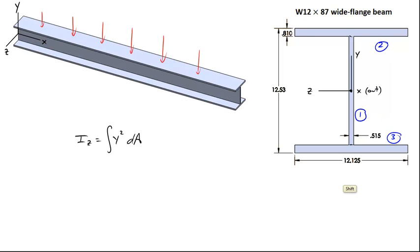There's a few other dimensions that we need to make the integration easier. The first one here is, this dimension is 6.0625, simply 12.125 inches divided by 2. The other dimension that we want is this dimension, the distance from the centroid to the bottom of the upper flange, and this is 5.455 inches. And the distance from the centroid to the top of the upper flange is 6.265 inches.